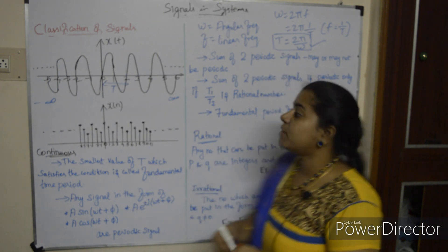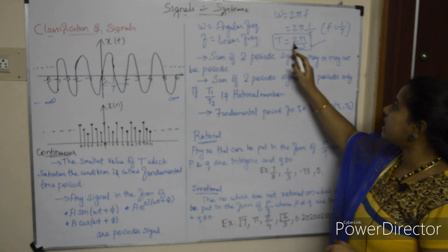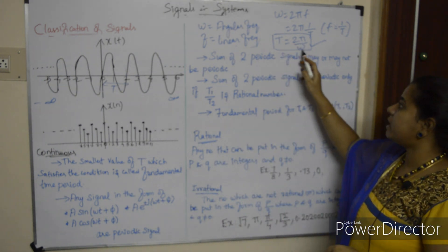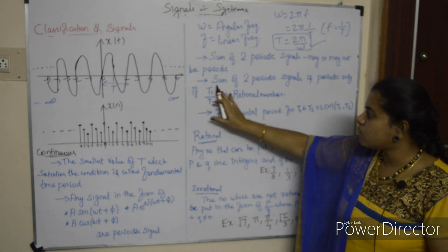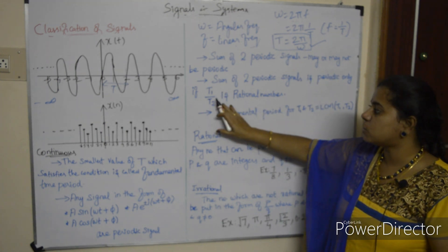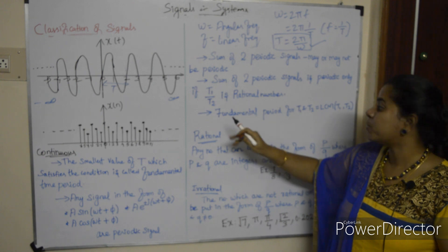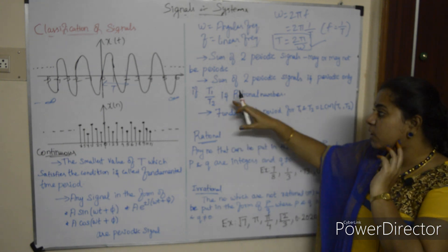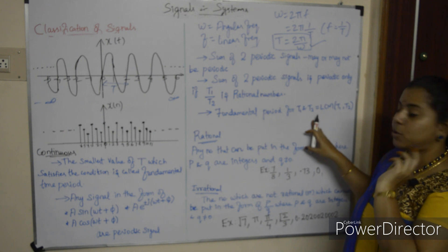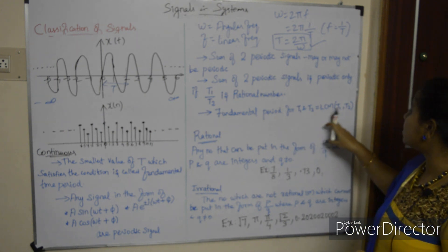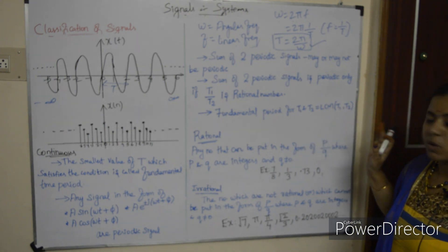To find the fundamental time period: for one signal, T = 2π/ω. For two signals with periods T1 and T2, the overall fundamental time period is the LCM of T1 and T2.